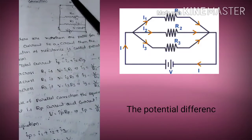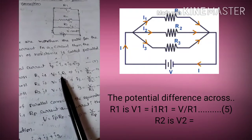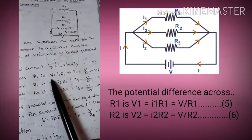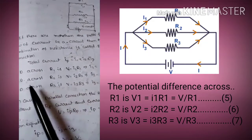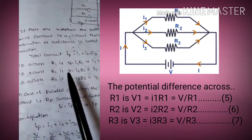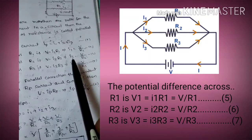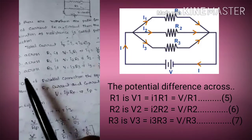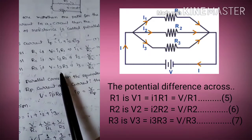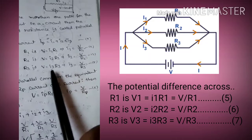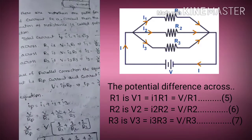The potential difference across R1 is constant, so V = i1 × R1, which gives i1 = V / R1. The potential difference across R2 gives V = i2 × R2, so i2 = V / R2. And the potential difference across R3 gives V = i3 × R3, so i3 = V / R3.